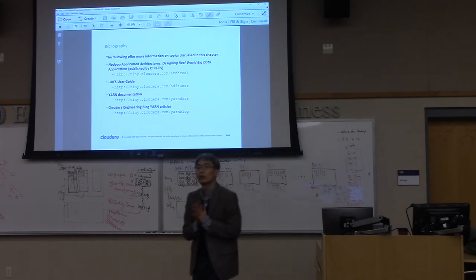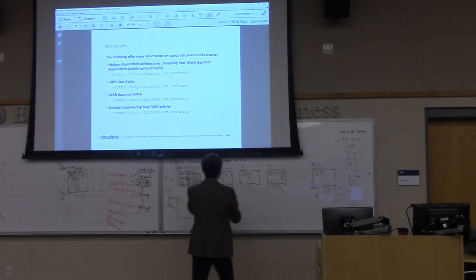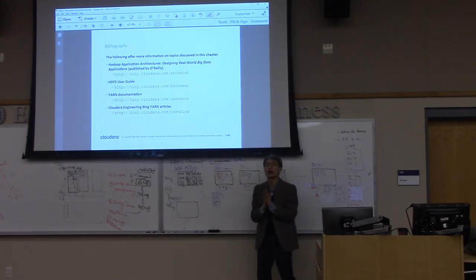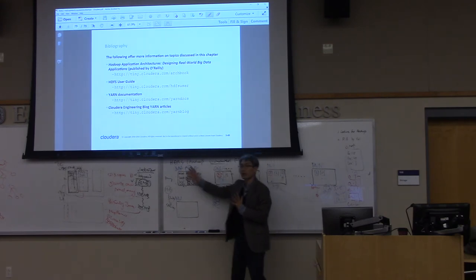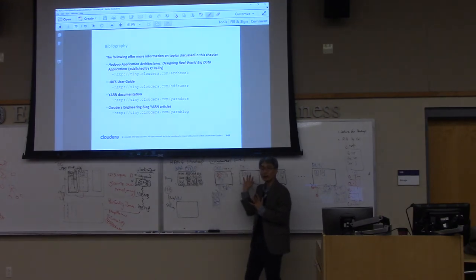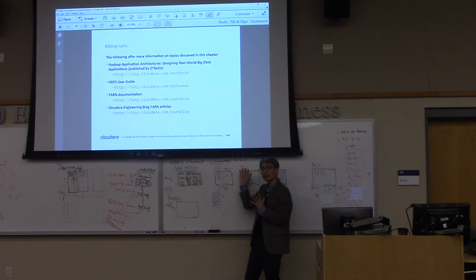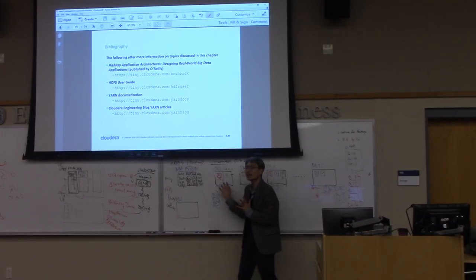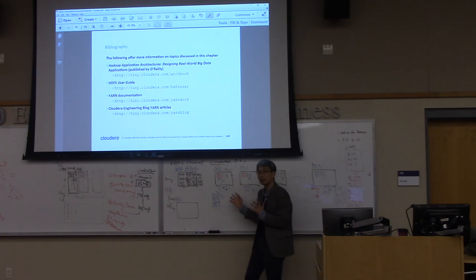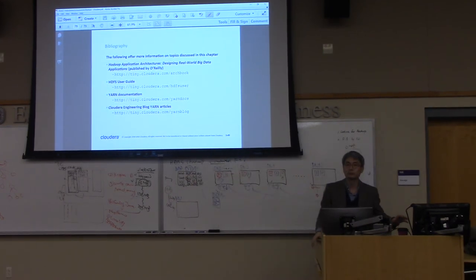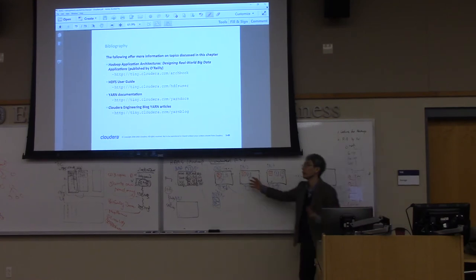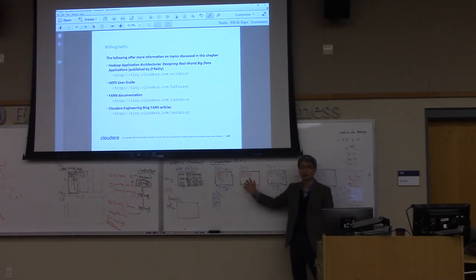Do the data nodes communicate with each other? No, they do not communicate with each other. Instead, the job tracker communicates with each task tracker. The data node one cannot communicate with other data nodes directly — they do not communicate. Each one is managed by the task tracker, and the task tracker communicates with the application manager in the case of YARN, otherwise the job tracker. If they needed to communicate with each other it would be N squared complexity — very complicated.